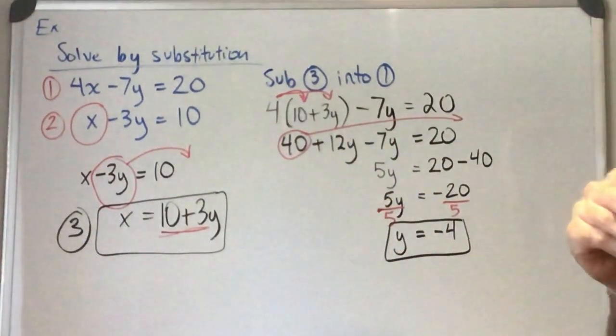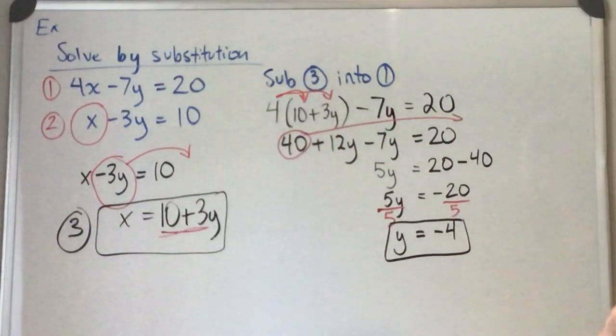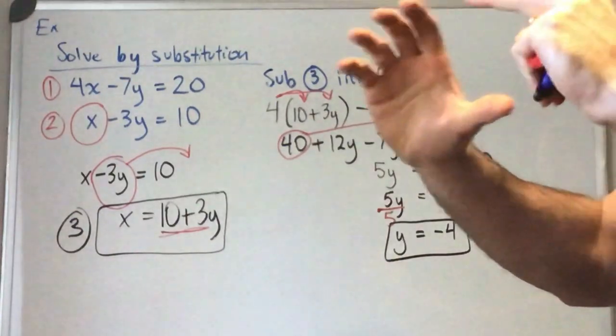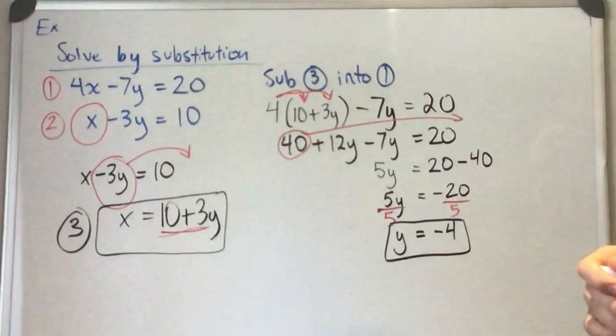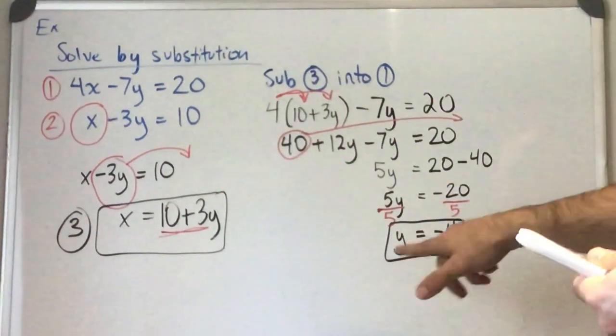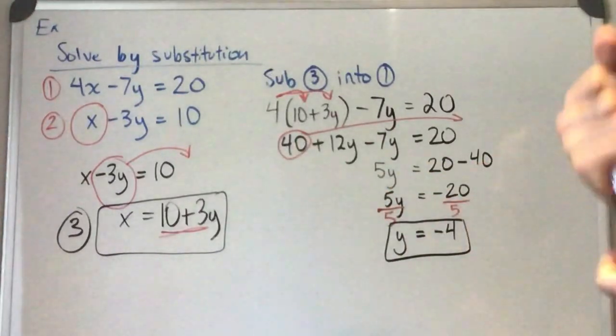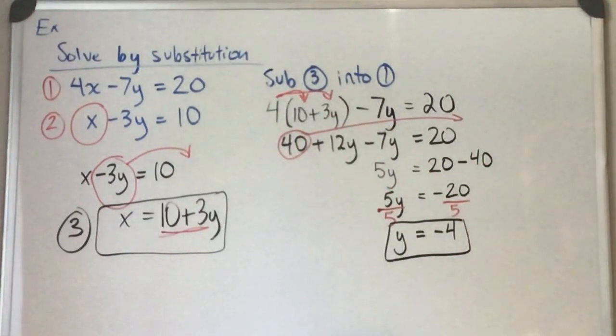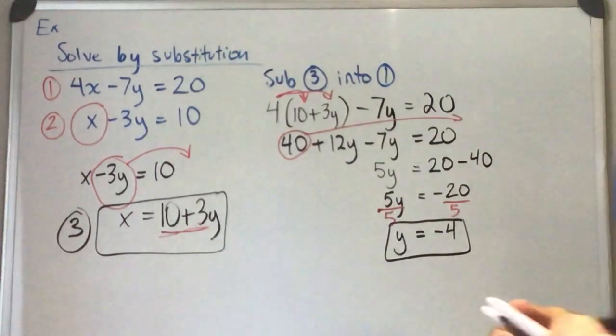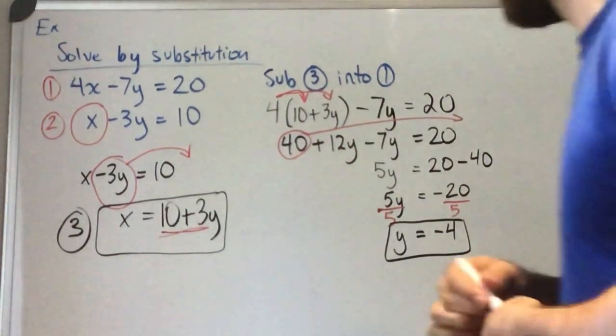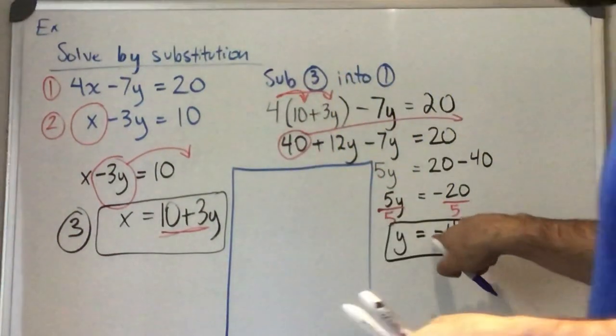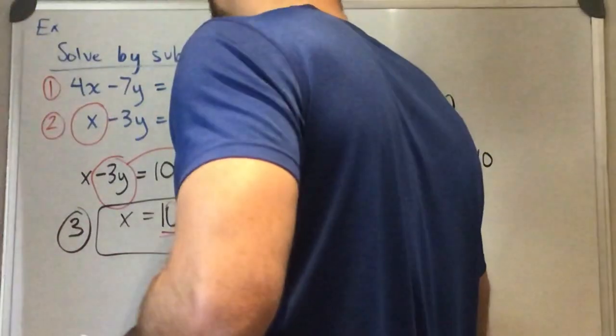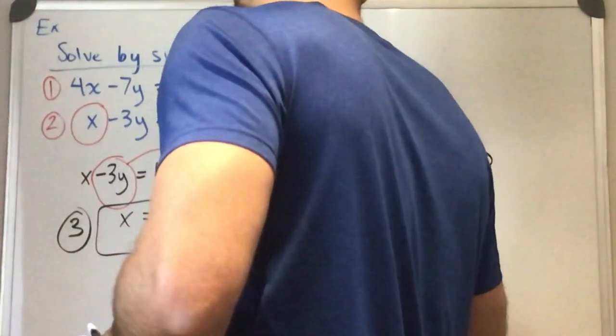But wait, there's more. Okay, we dial back the clock to yesterday or our last lesson. Our solution was a coordinate. It was an x and a y. This is only half the answer. So we're going to take this answer. We're going to sub it into whatever question, whatever equation we like and try to solve for x. Okay, so I'm going to try to find room here. You know what? I think I can do it in here. I'm going to make some room here. So we're going to sub in y equals negative 4.